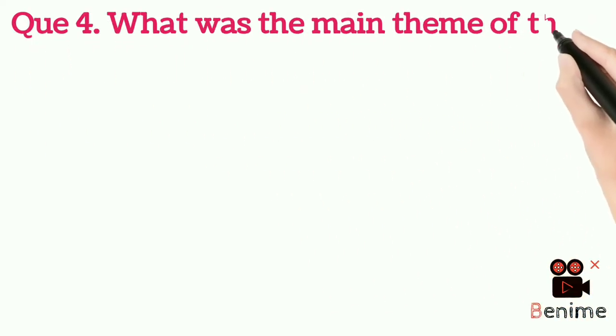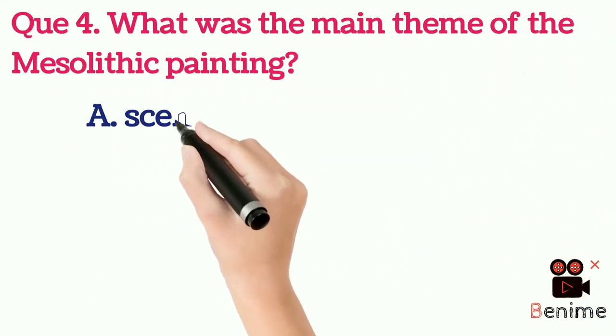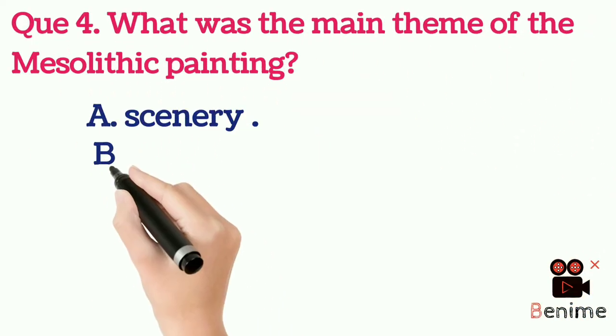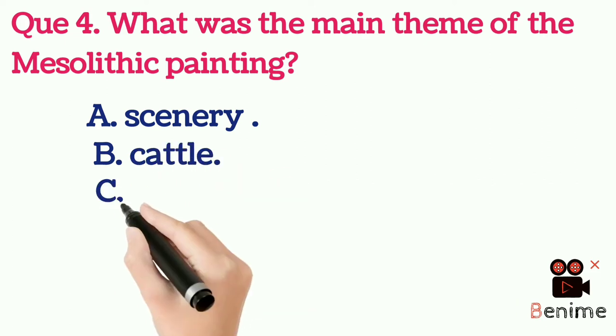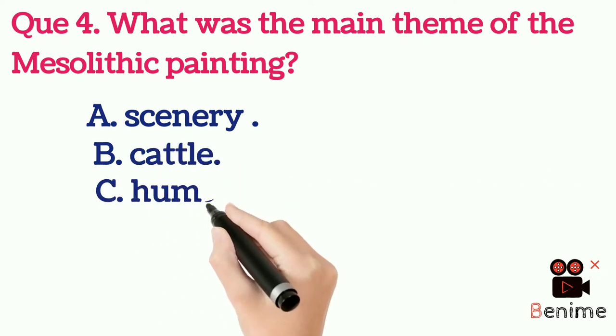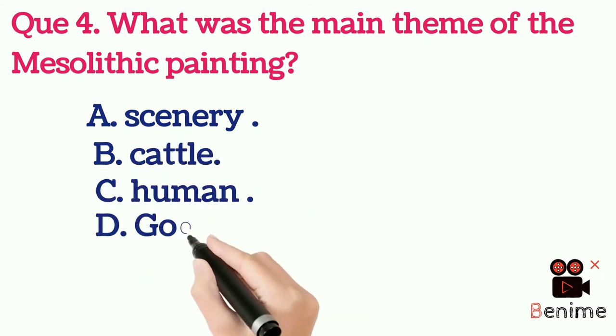Question 4: What was the main theme of the Mesolithic painting? A. Scenery. B. Cattle. C. Human. D. God. Answer B: Cattle.